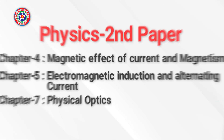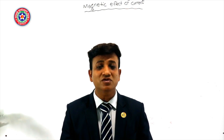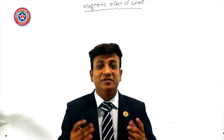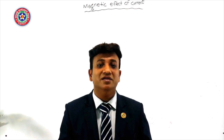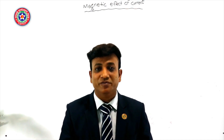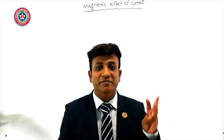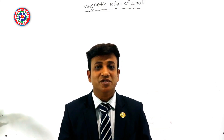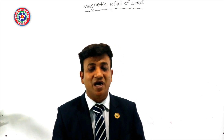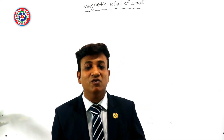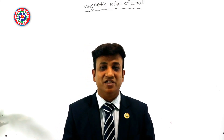In this video I am going to discuss: number one, the definition of magnetic effect of current; number two, how to find the direction of magnetic field; number three, the conception of Oersted's experiment about magnetic effect of current; and number four, the Biot-Savart law about magnetic field.